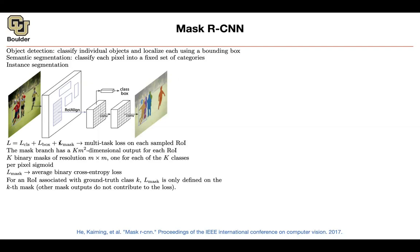During inference, per each pixel, you still need to predict all of them and then pick the maximum sigmoid value. You can also use CRF to make your predictions better. There is a difference between how you train and how you do your prediction. That's why you need K times M-squared outputs for your mask branch, and because it is individual, your network has a much easier task solving independent problems rather than one complicated intertwined problem.